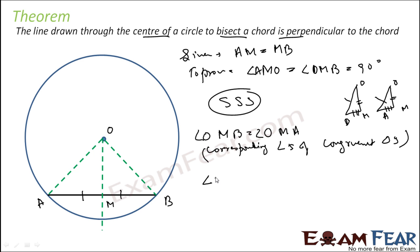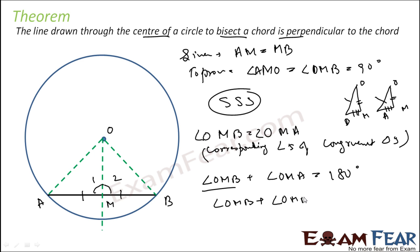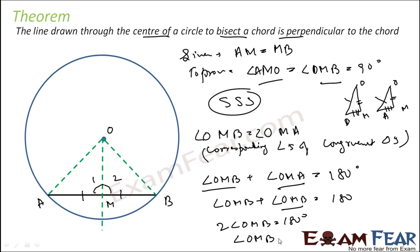We know that angle OMB plus angle OMA is equal to 180 degrees since they form a linear pair. Since angle OMA equals angle OMB, we have twice angle OMB equal to 180 degrees, so angle OMB is equal to 90 degrees. Therefore this angle is 90 degrees, proving that if a line is drawn from the center to a chord and it bisects the chord, then that line is perpendicular to the chord. This is the converse theorem.